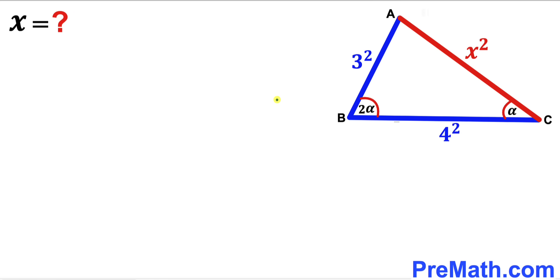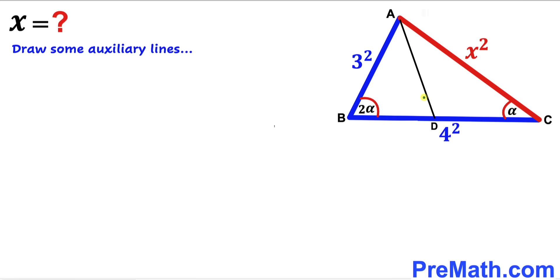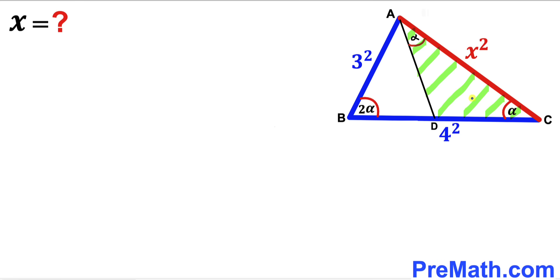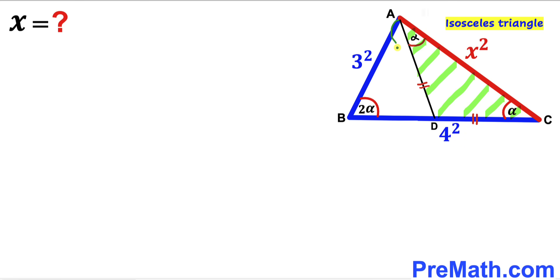Let's get started. We can see this angle is 2 times alpha and this angle is alpha. So we are going to draw some auxiliary lines to make our job simple. I have created line AD such that angle CAD is alpha as well. Now let's focus on triangle ADC — this is an isosceles triangle since both angles are alpha, so side AD equals side CD.